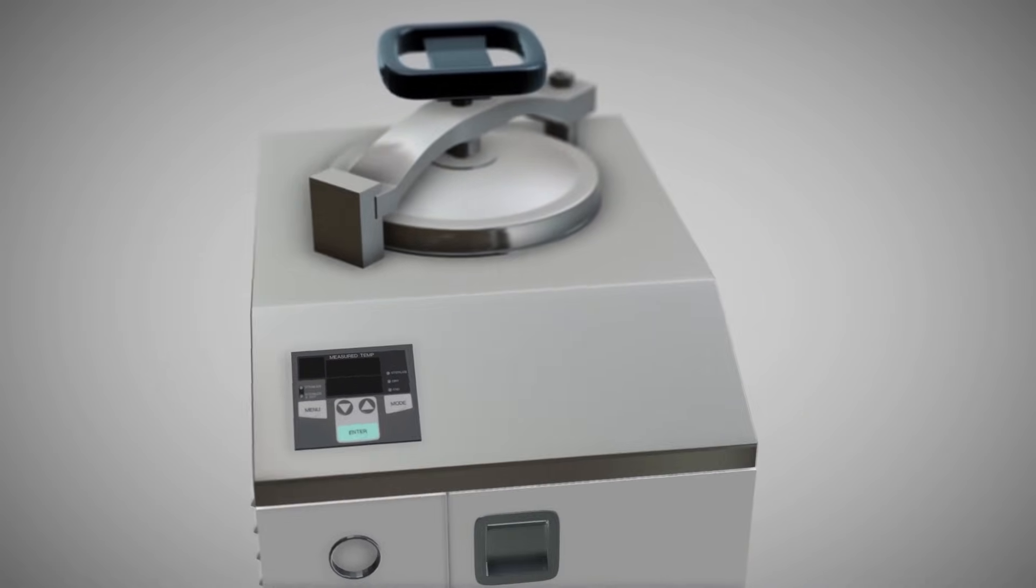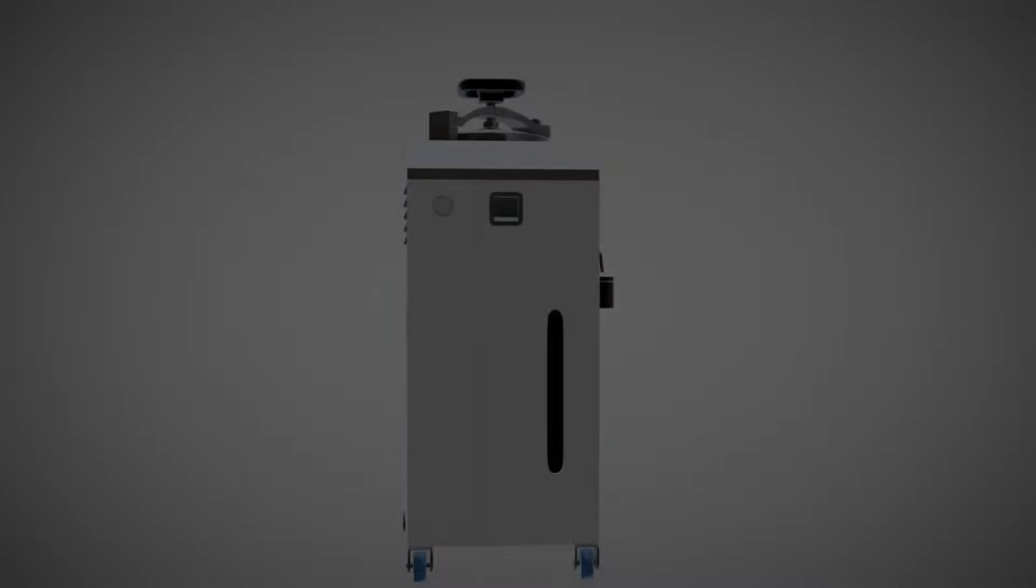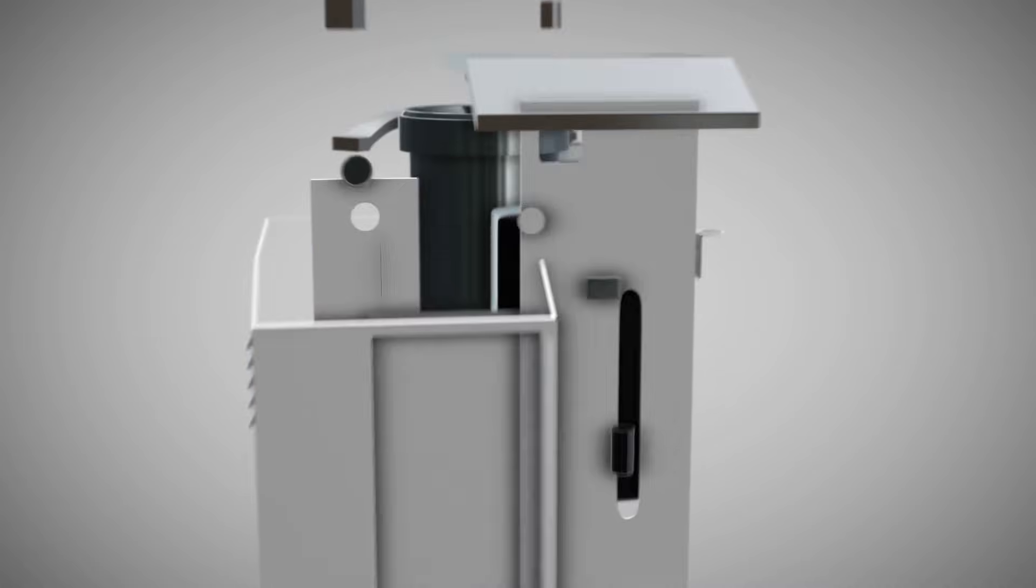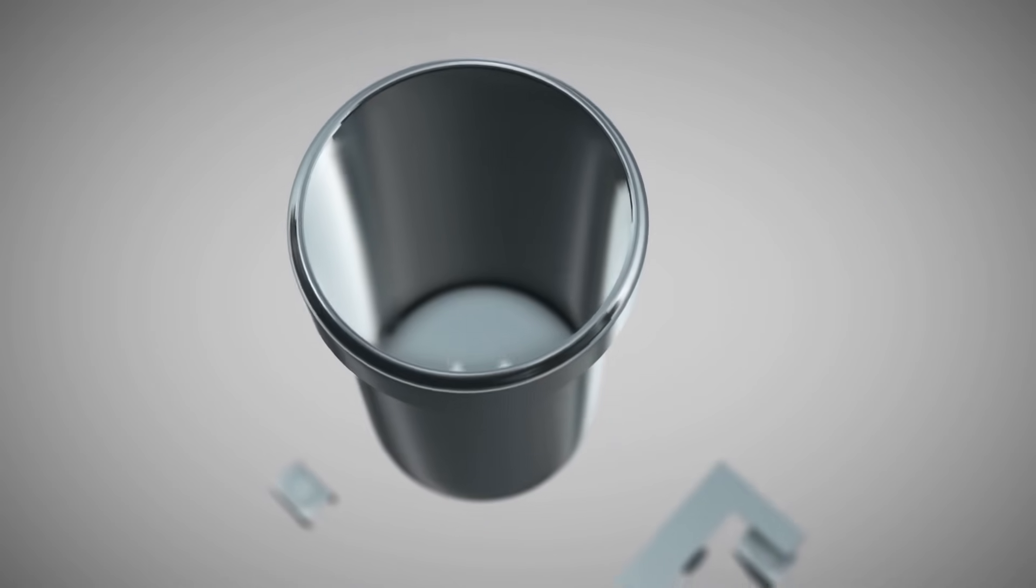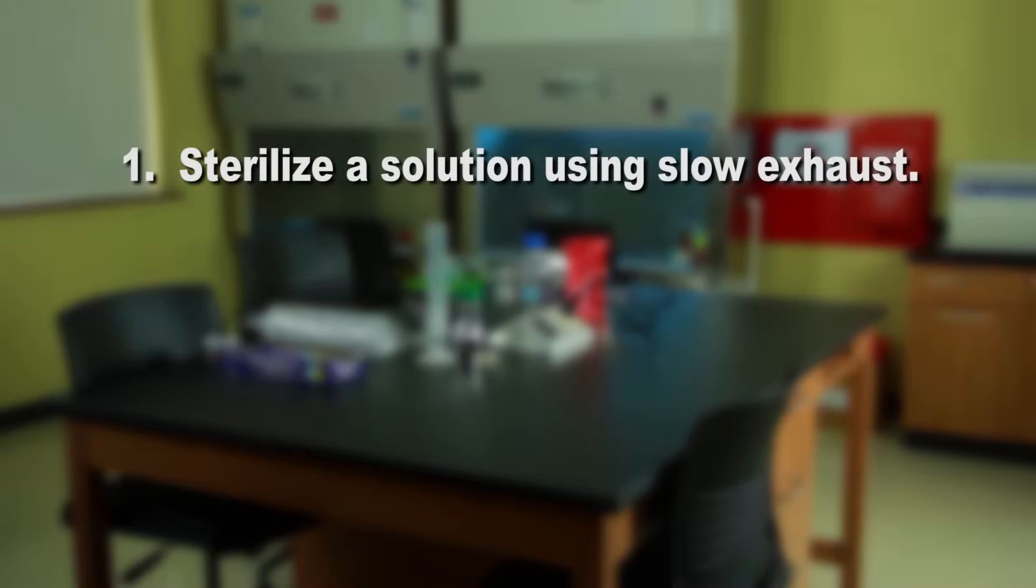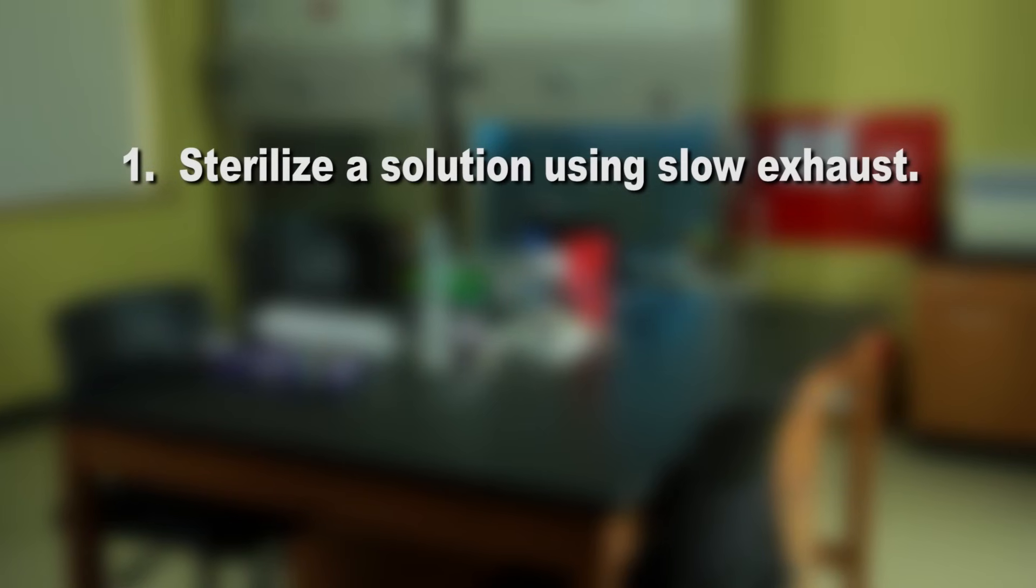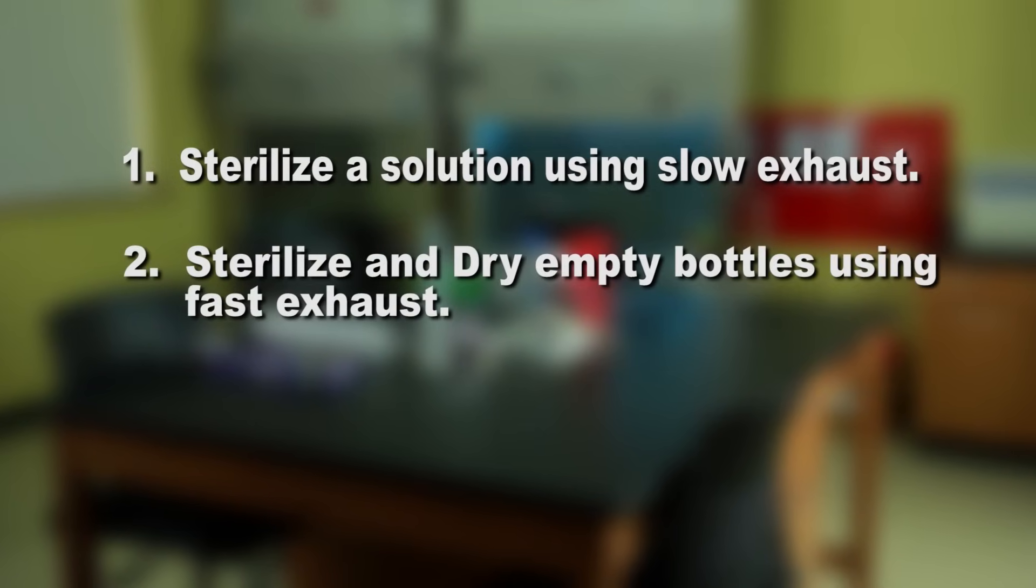So how do we sterilize materials in the lab? We use a device called an autoclave. Basically, an autoclave is a powerful pressure cooker that uses heat, steam, and pressure to destroy microorganisms. First, we'll sterilize a solution using the slow exhaust cycle, and second, we'll sterilize some empty bottles using fast exhaust.